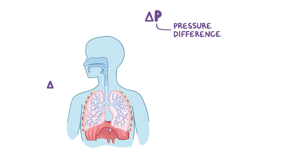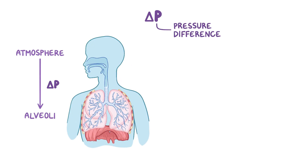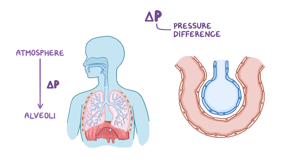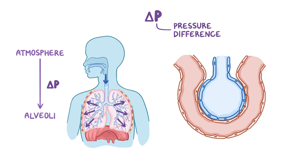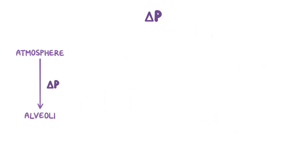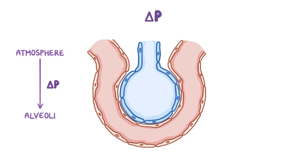The pressure difference, or delta P, between the atmosphere and the alveoli can be created by changing the volume of the lungs during inspiration and expiration. During inspiration, contraction of the diaphragm and chest muscles causes the lungs to expand, increasing their volume and the volume of the alveoli. Looking at a single alveolus, as its volume increases, there's more room inside for gas particles, so the pressure inside goes down and becomes lower than atmospheric pressure. As a result, air flows from the atmosphere into the alveolus.